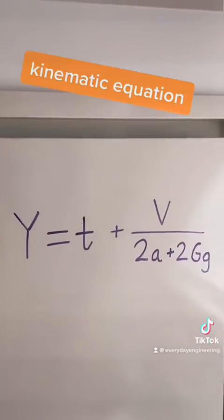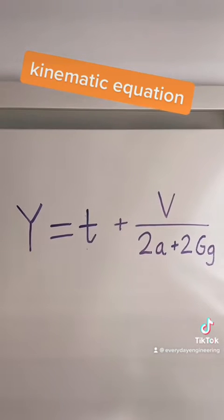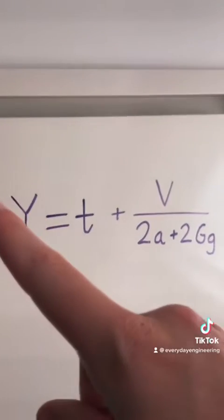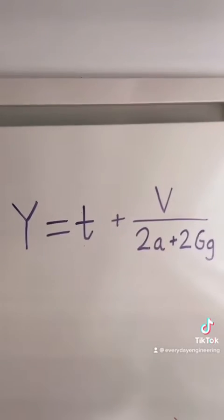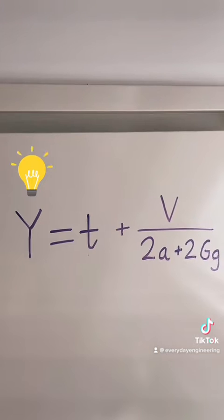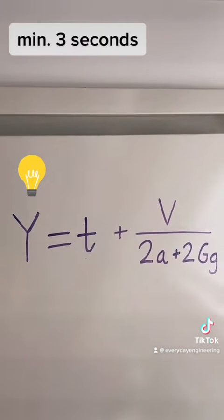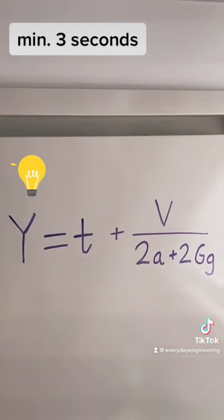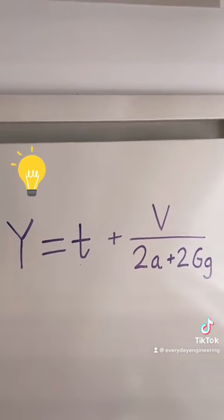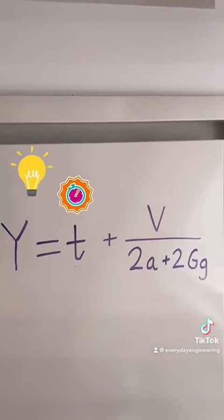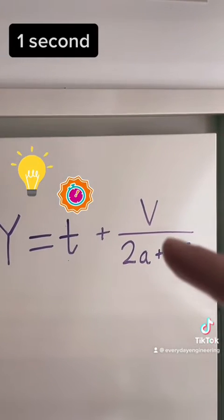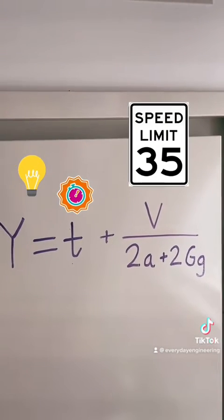So this is the kinematic equation — it looks scary, but let's go through it. Y is the yellow time that we're looking for; in Connecticut that'll be a minimum of three seconds no matter what. T is the human reaction time, one second, and V is the speed of the road.